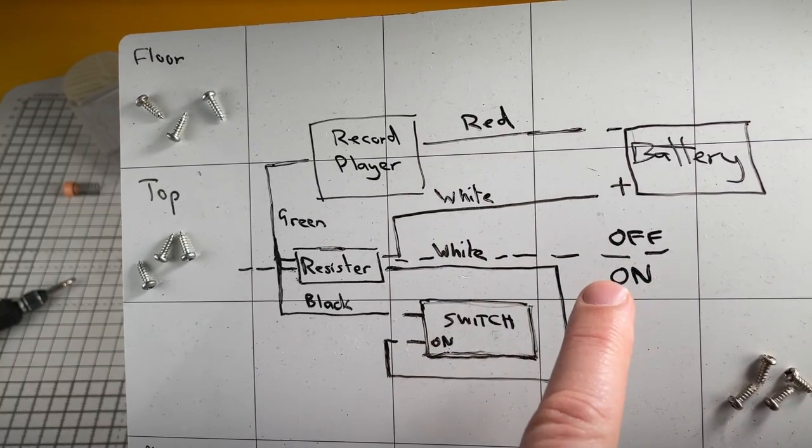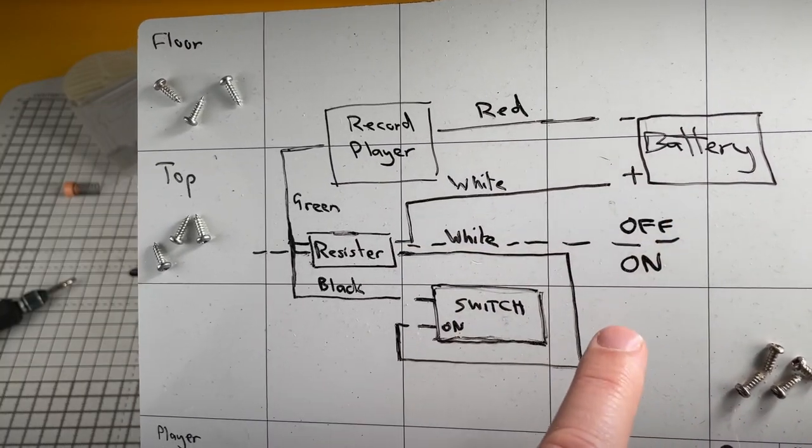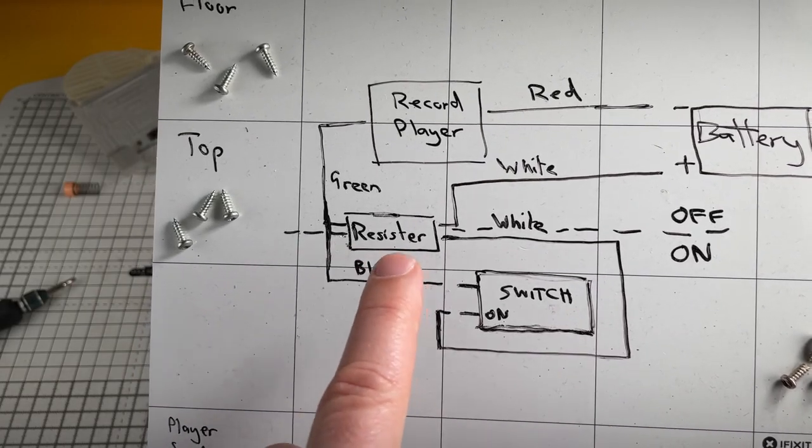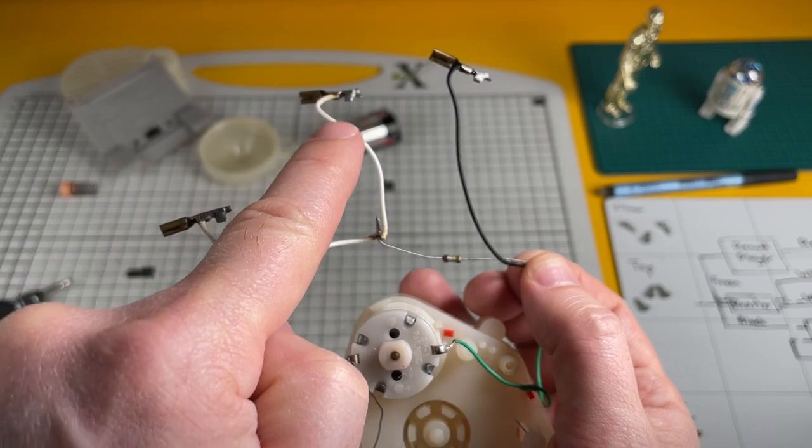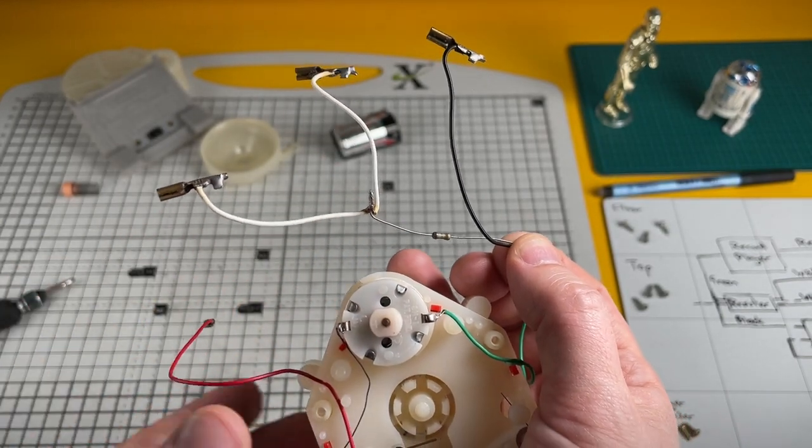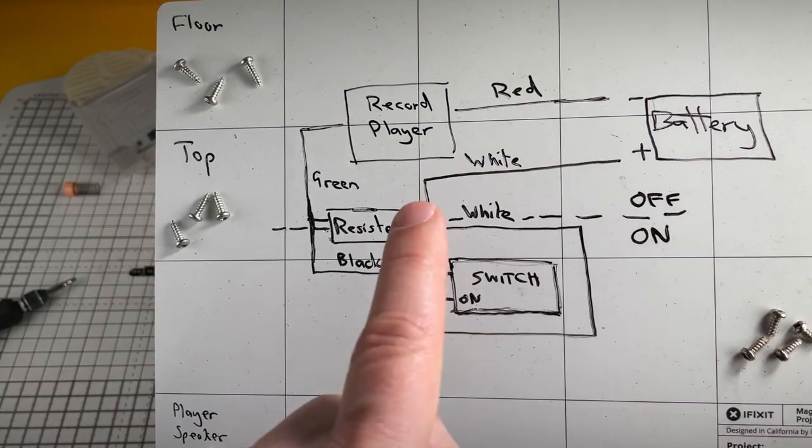We've got this red wire going to the negative terminal. You've got the white wire going to the positive terminal. And then you have this resistor. When this switch is on the resistor is bypassed. Therefore you get the full power from the battery to the motor.